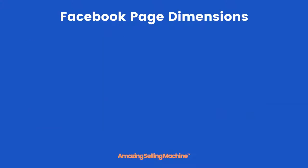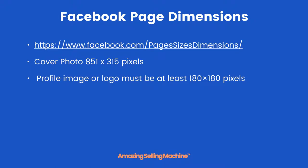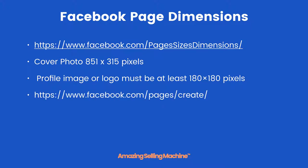Facebook page dimensions: you can go to facebook.com/pages/sizes-dimensions to see all the relevant dimensions of images and boxes. The ones we are interested in are the cover photo, which is 851 by 315 pixels, and the profile image or logo, which must be at least 180 by 180 pixels — in other words, it's a square.